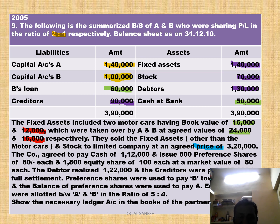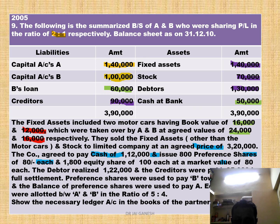The company agreed to pay cash Rs. 1,12,000. Issue 800 preference shares of Rs. 80 each — that gives Rs. 64,000. And 1,800 equity shares of Rs. 100 each at a market value of Rs. 80 each — 1,800 into 80 gives Rs. 1,44,000. So the total PC is Rs. 1,12,000 plus Rs. 64,000 plus Rs. 1,44,000 equals Rs. 3,20,000.